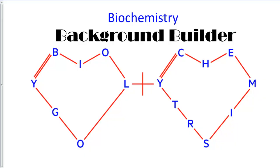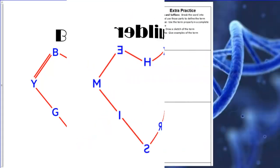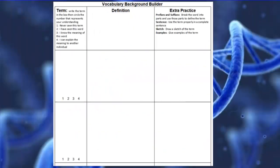This is our background builder mini lesson on biochemistry. For this background builder we're going to be using the note sheet that looks like this. This sheet is usually put into your notebook at the beginning of the unit, and even though it says vocabulary or background builder, it doesn't always mean it's going to be vocabulary words.